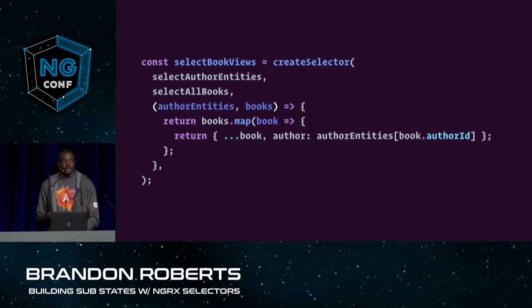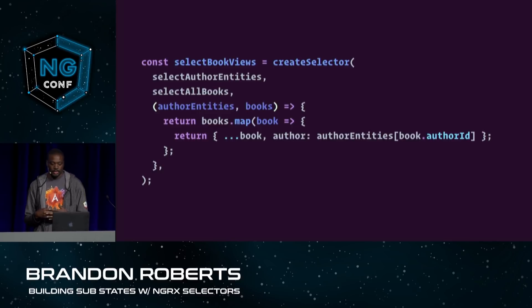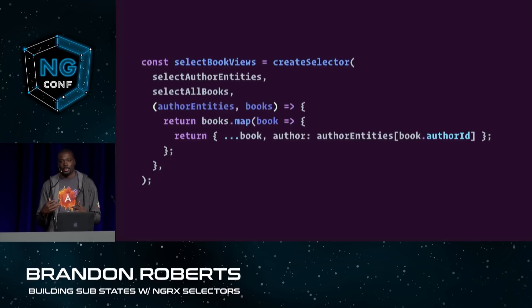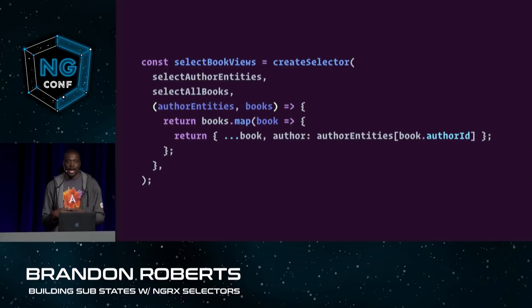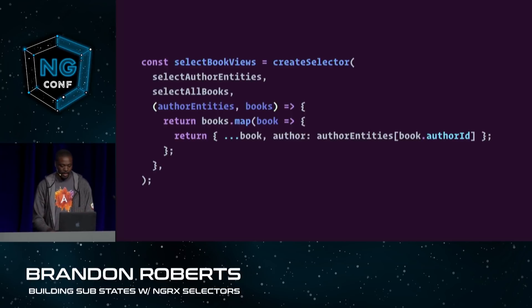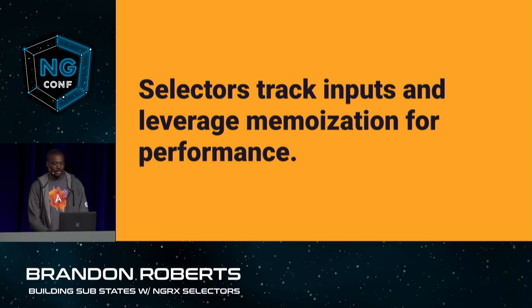Looking at another example of book views, this allows you to scope down views that are computationally expensive. Here I'm using a dictionary of authors and an array of books to map those two together. As opposed to filtering through each author in an array, I can just directly pick off the author from the entities. Selectors track inputs and leverage memoization for performance.